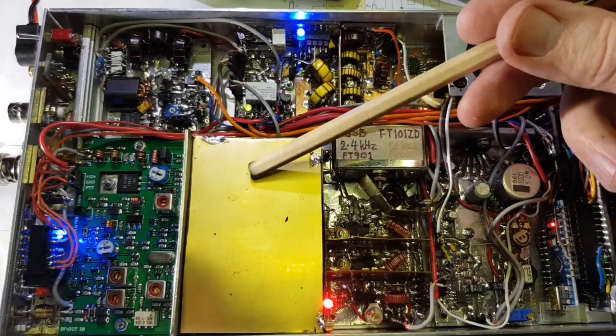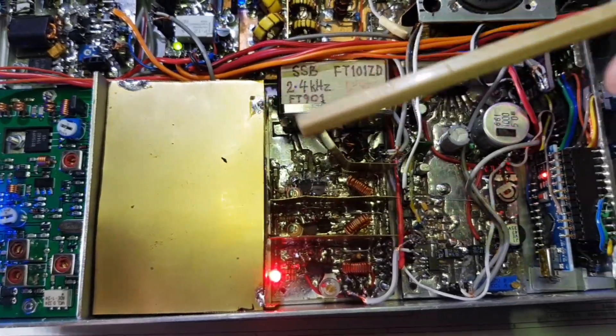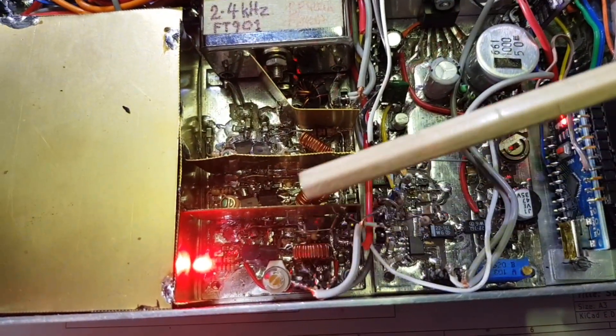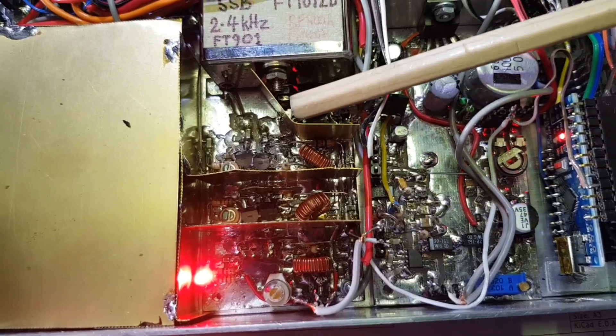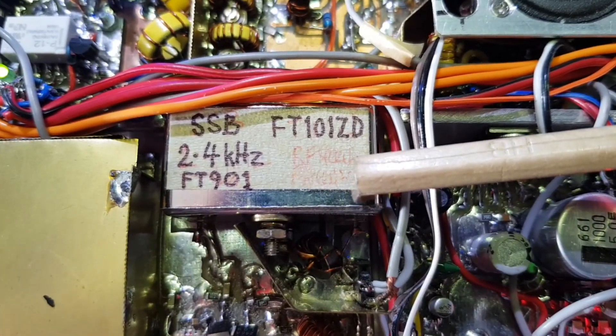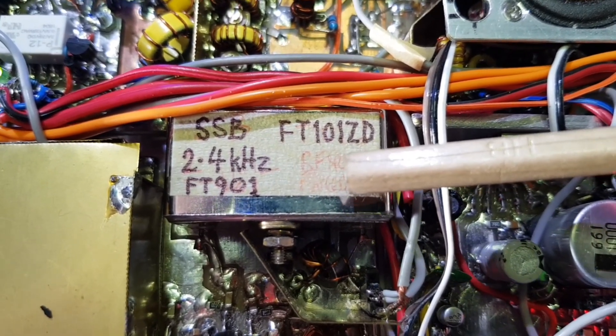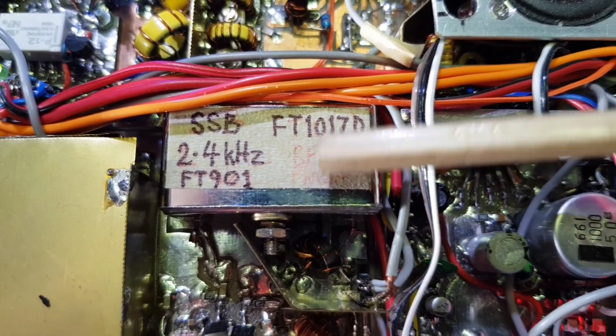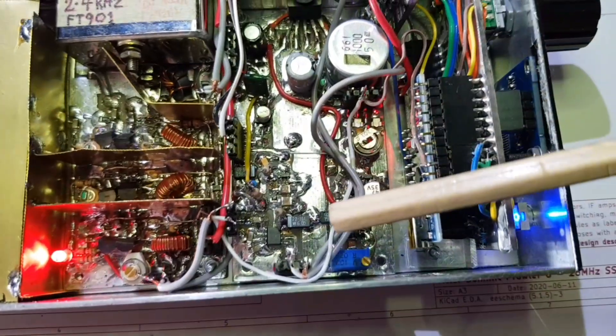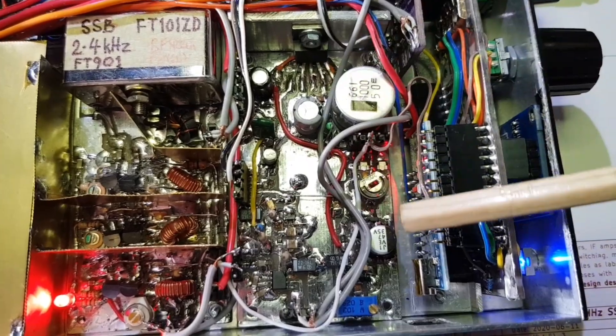This is the 28MHz receiver front end and filtering. This is the three-stage IF strip. The 8.9MHz crystal filter, which I've marked up as coming from an FT-101ZD or an FT-901. That's the product detector, audio amplifier and AGC.